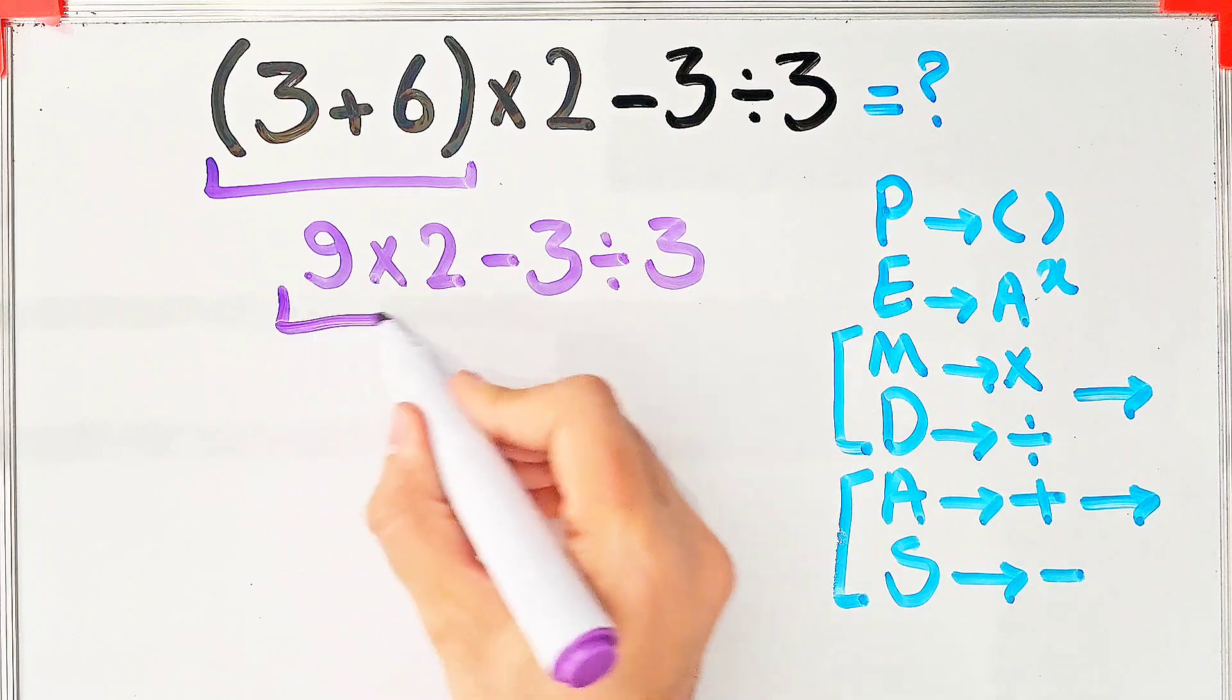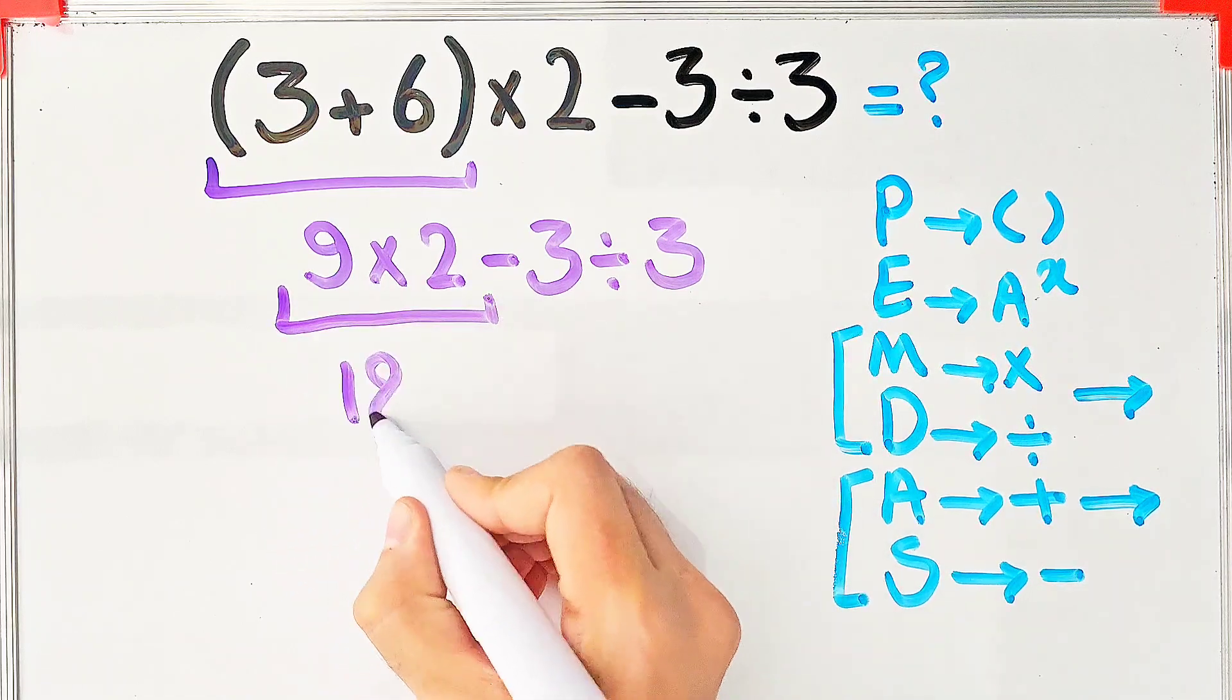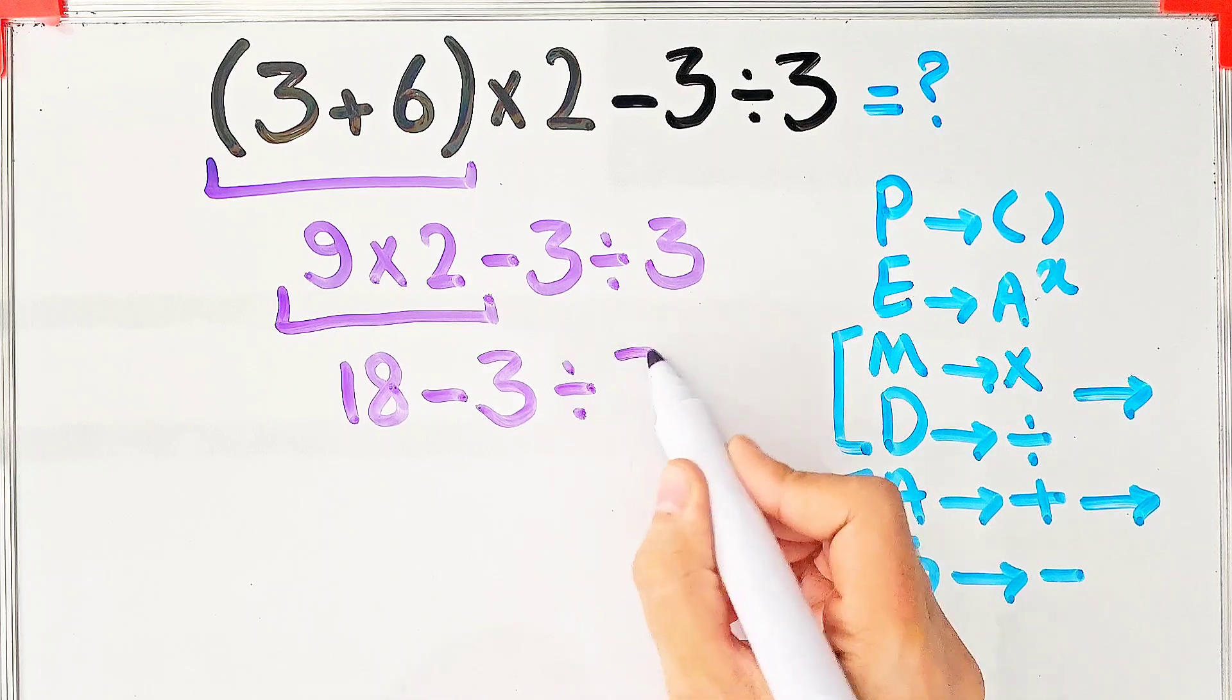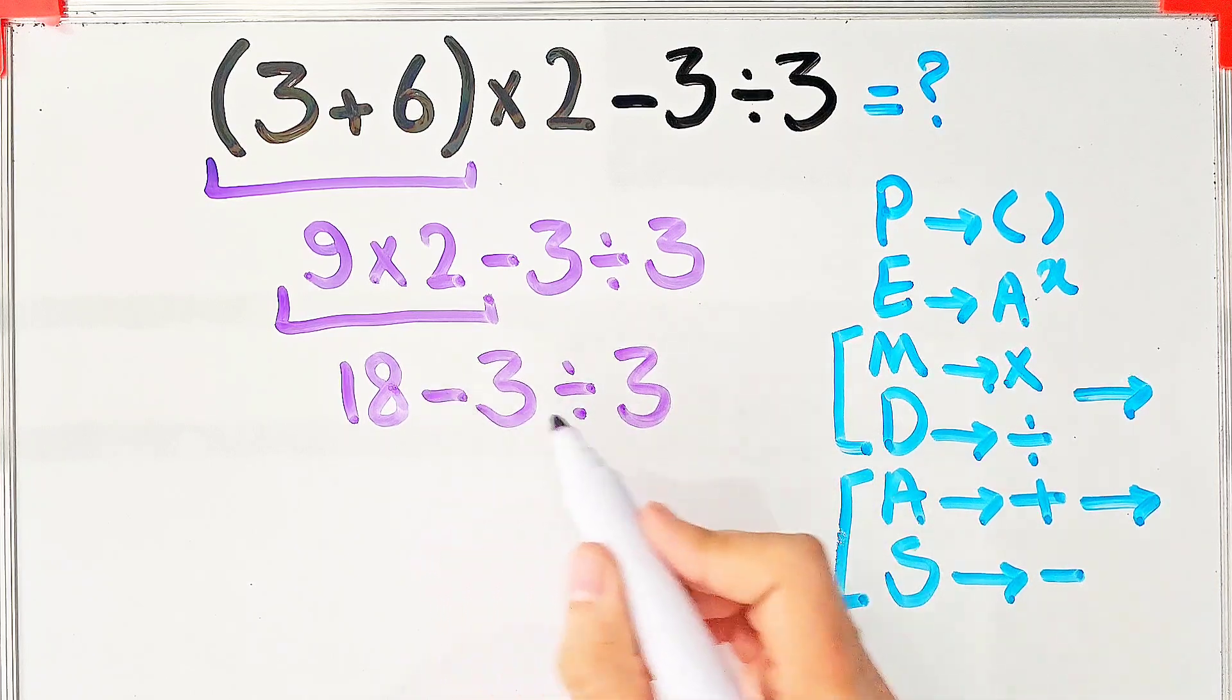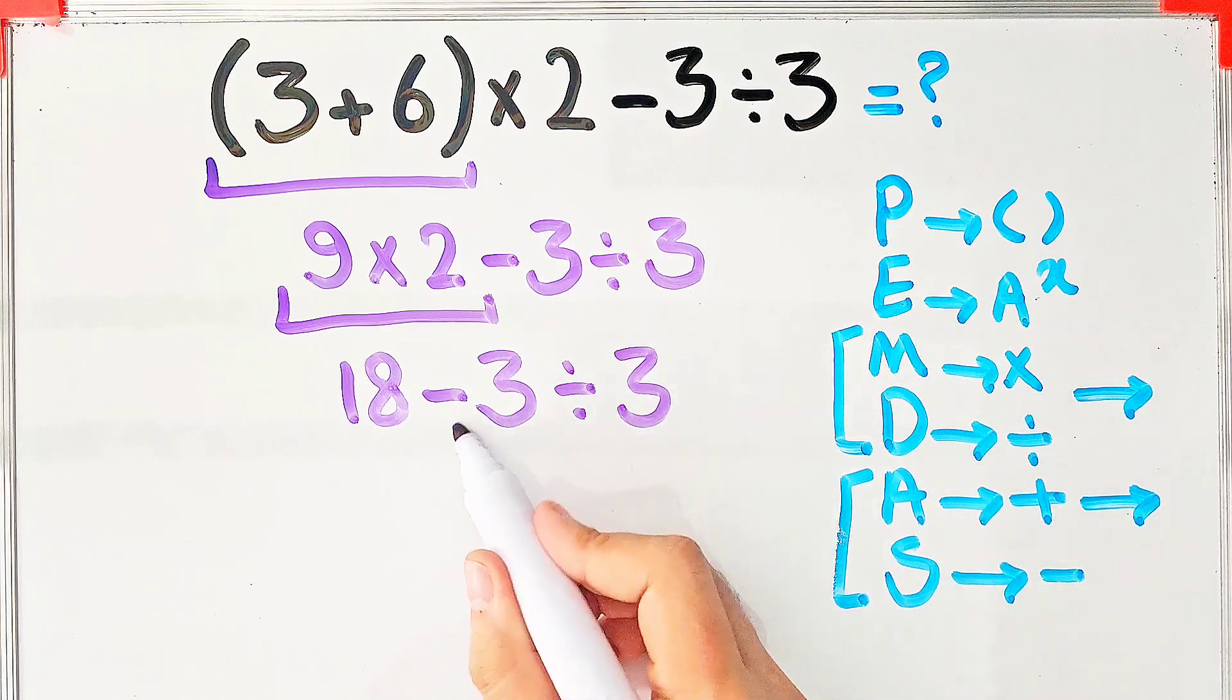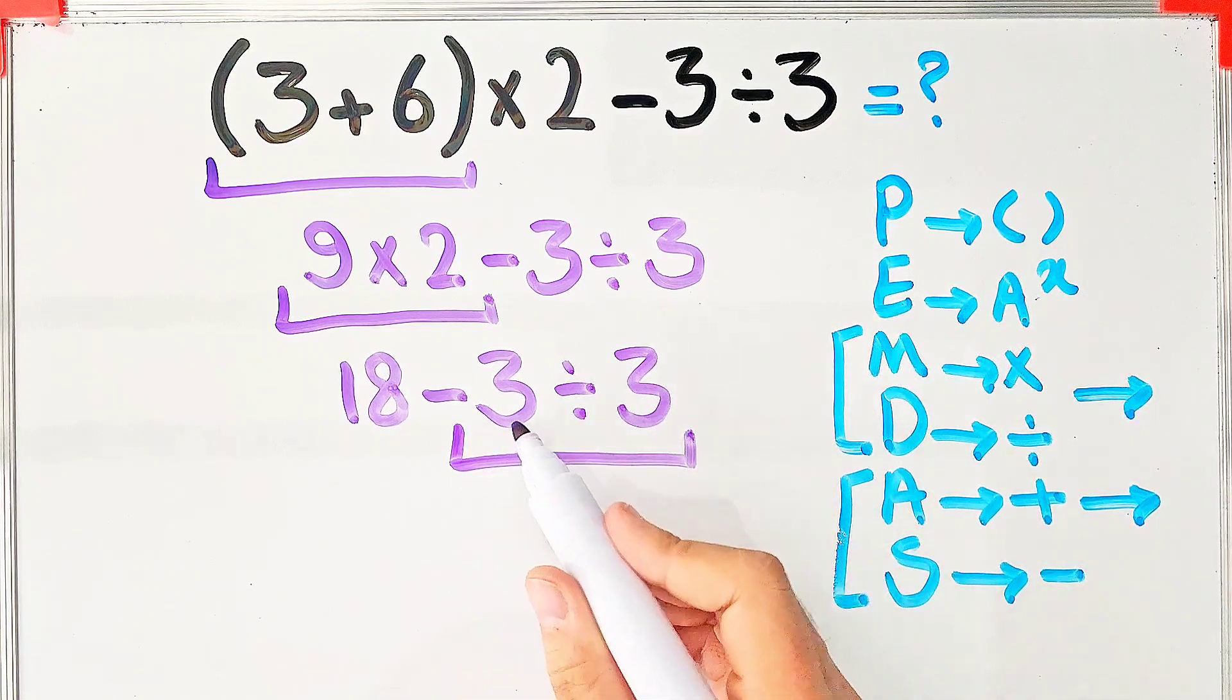9×2 equals 18. We have 18-3 then divided by 3. We have subtraction and division. The division has higher priority than subtraction. First we do division: -3 divided by 3 equals -1.